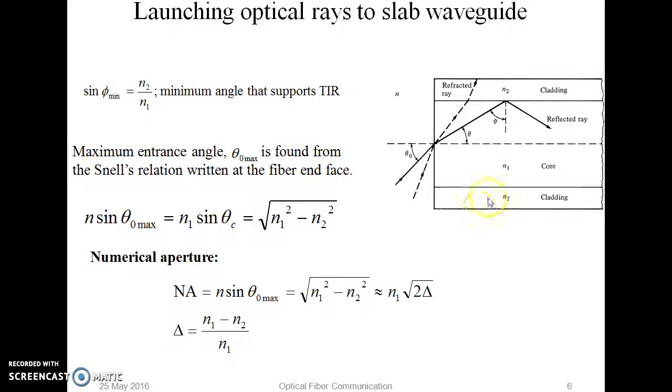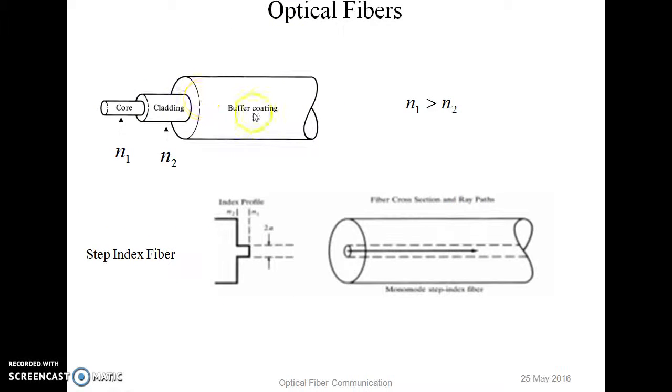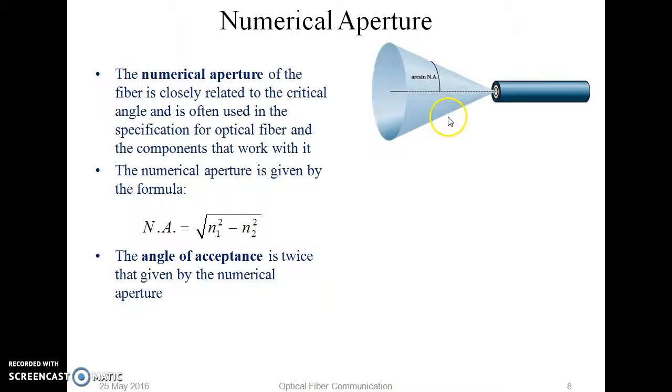Here we have the construction of a fiber. We can see the relation between N1 and N2. N1 should be greater than N2. This is the definition of numerical aperture. It also depends on the angle of acceptance. The maximum angle of acceptance at the core area defines the numerical aperture.